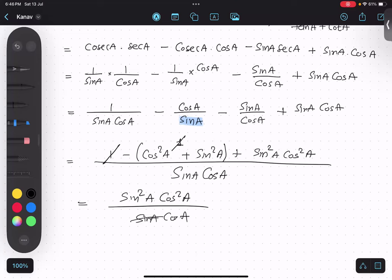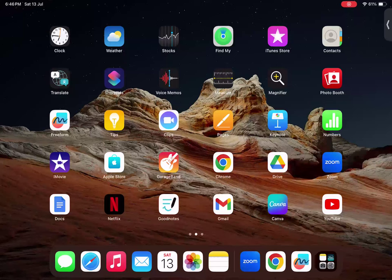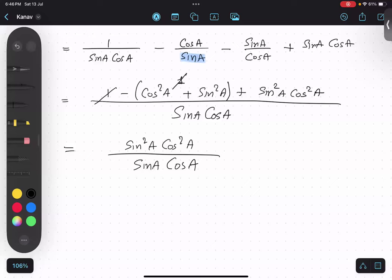So sin and, that's one. Sin and square A cancel, cos and this one cancel, so sin A into cos A is my LHS.